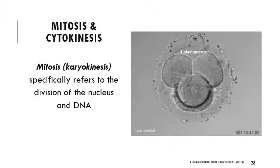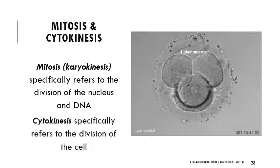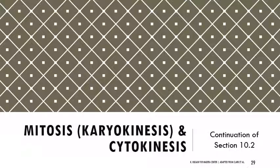Mitosis is also called karyokinesis — 'karyo' has to do with the nucleus, like in prokaryote and eukaryote. So karyokinesis is the movement of the nucleus, the movement of the DNA. Mitosis refers to that process of DNA division. Cytokinesis refers to the division of the cell itself — 'cyto' means cell. So we have both processes happening: karyokinesis or mitosis, and cytokinesis or cell movement.